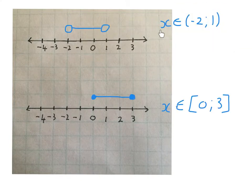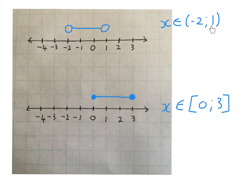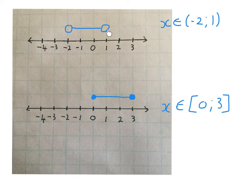Here I wrote an example. It says x is an element of, and what it reads is: we want all the numbers from minus 2 to 1. This round bracket means excluding the minus 2, so we want the number just on the right-hand side of minus 2. The round bracket at 1 means excluding the 1, so I drew a circle at 1 and a circle at minus 2 — we don't want either of those, but we want all the numbers in between.